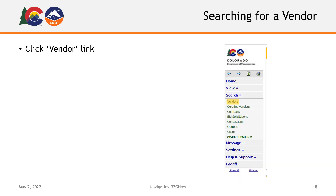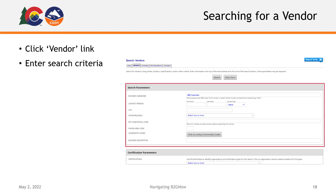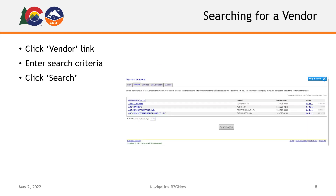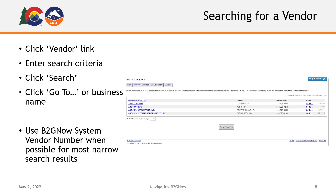To search for a vendor, locate the Vendor link in the Search menu. You will be taken to the search screen. Enter any pertinent information to aid in your search, then select the Search button. Select the blue Go To link beside the appropriate vendor or the vendor's name. CDOT recommends using a vendor number if available, but otherwise suggests including as much information in your vendor search as possible to receive the most narrow results.